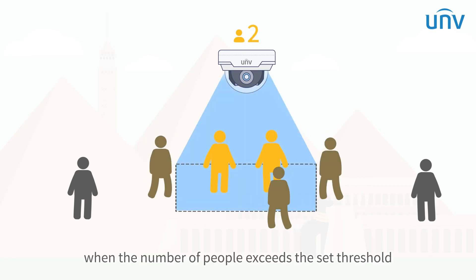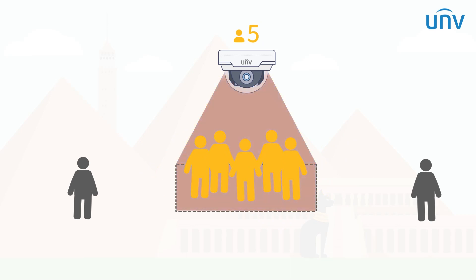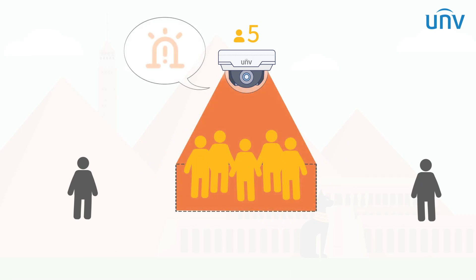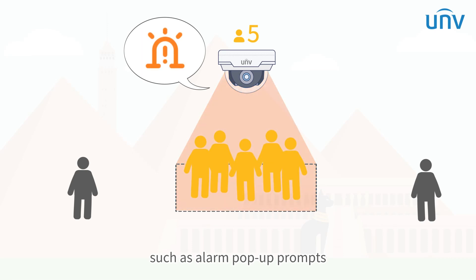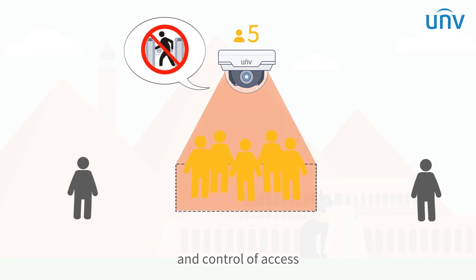When the number of people exceeds the set threshold, the IP camera will initiate a linkage operation, such as alarm pop-up prompts, information release, and control of access.